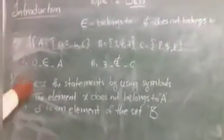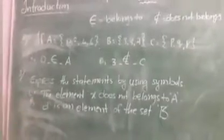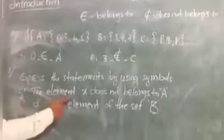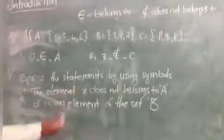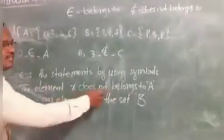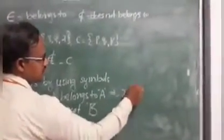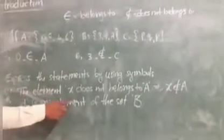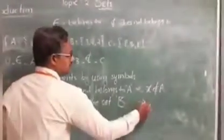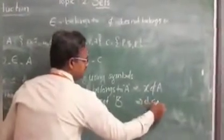Now the third exercise: we have to write in symbols. The element X does not belong to A — we write X ∉ A. Similarly, D is an element of the set D — we write D ∈ D. In this manner we can write the remaining problems.